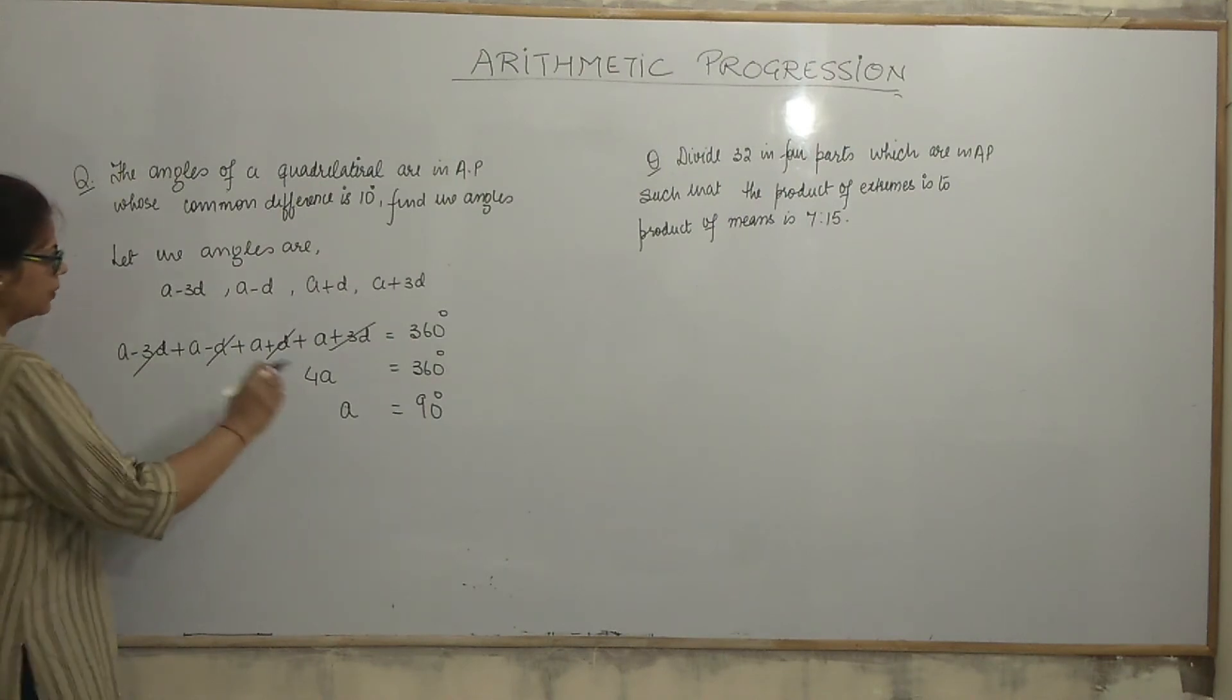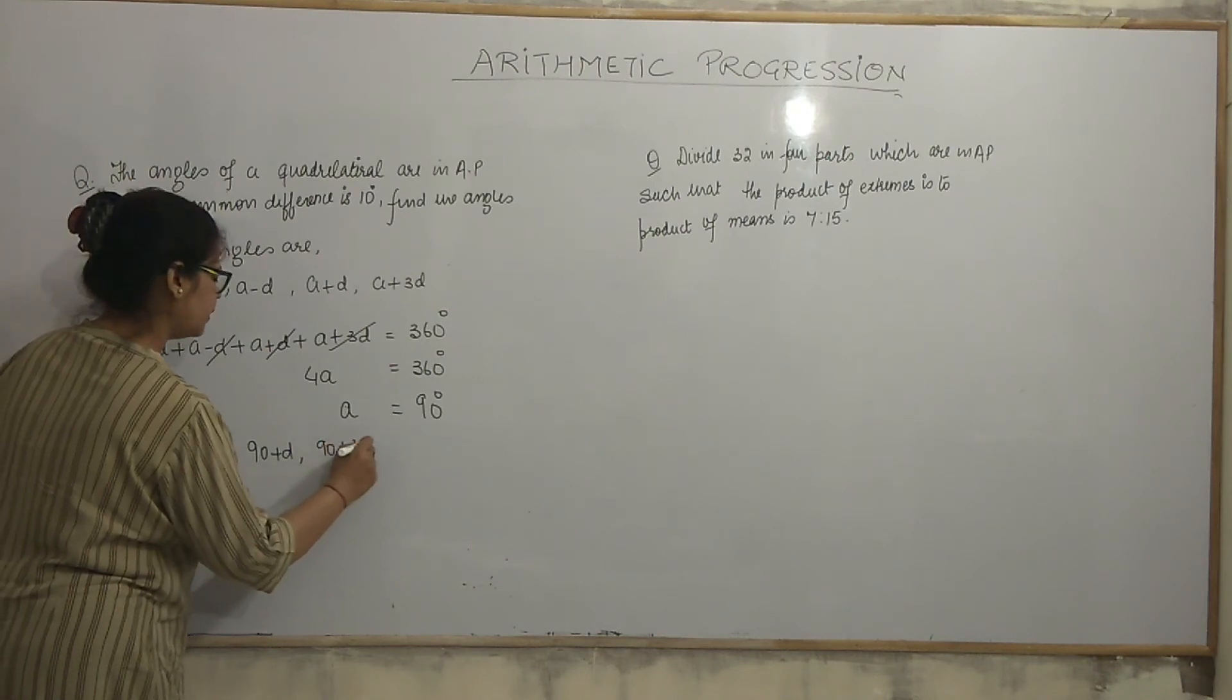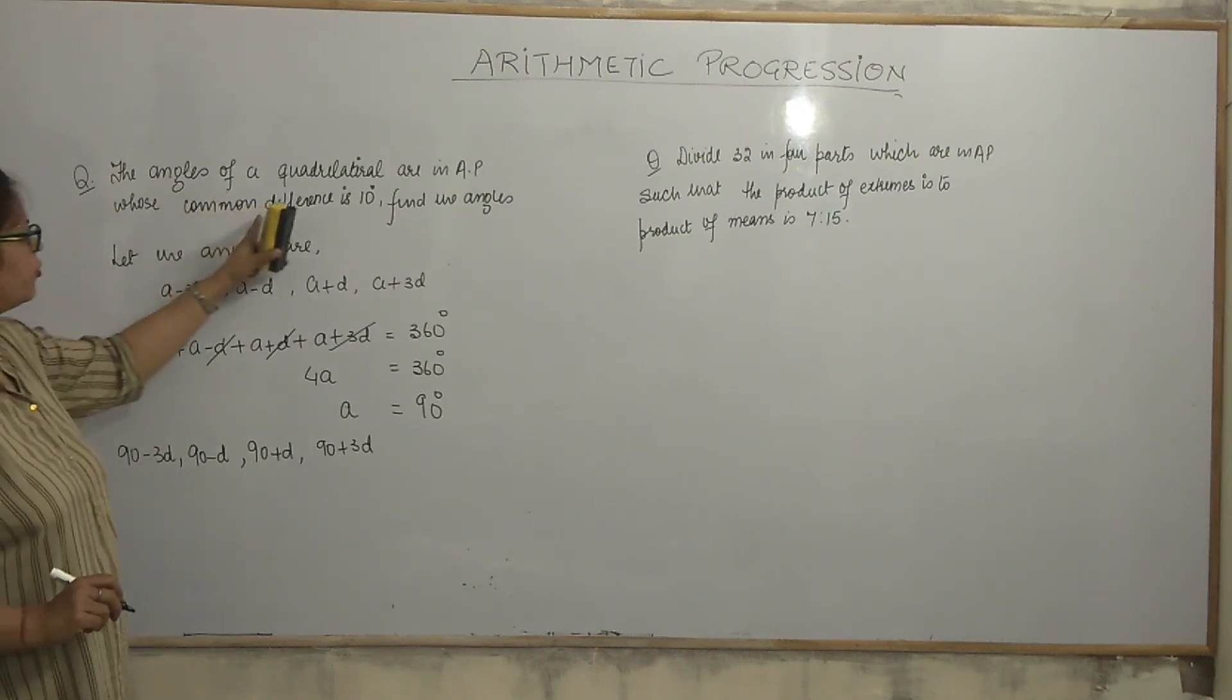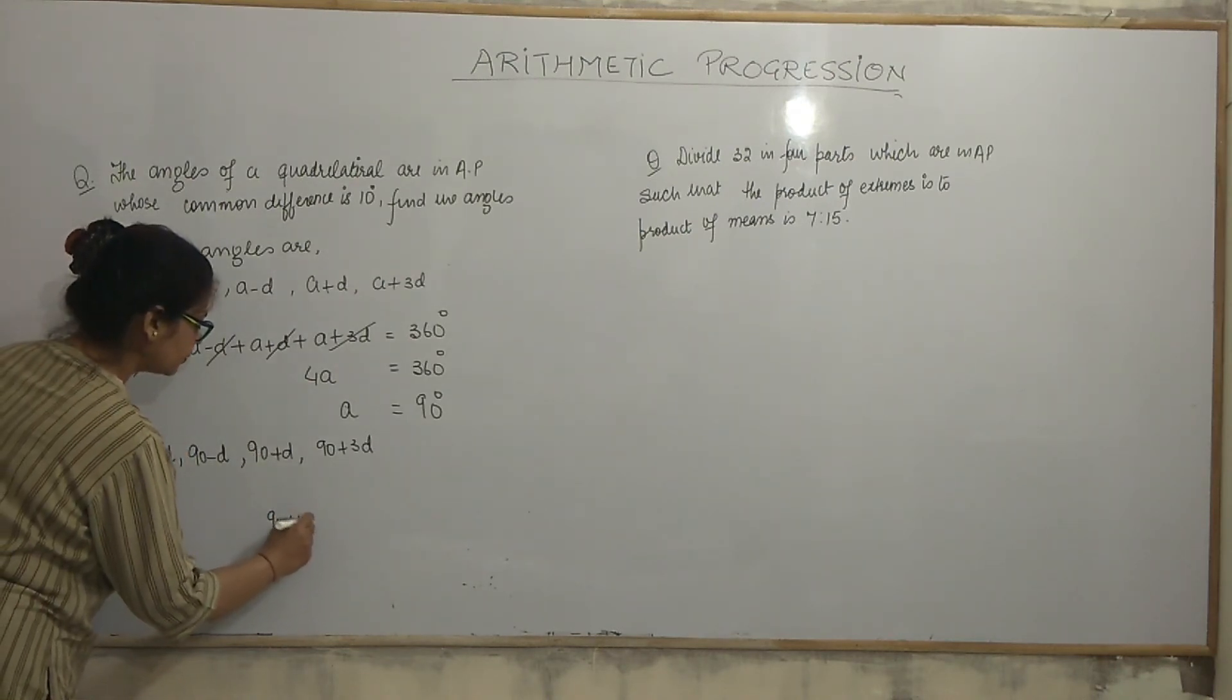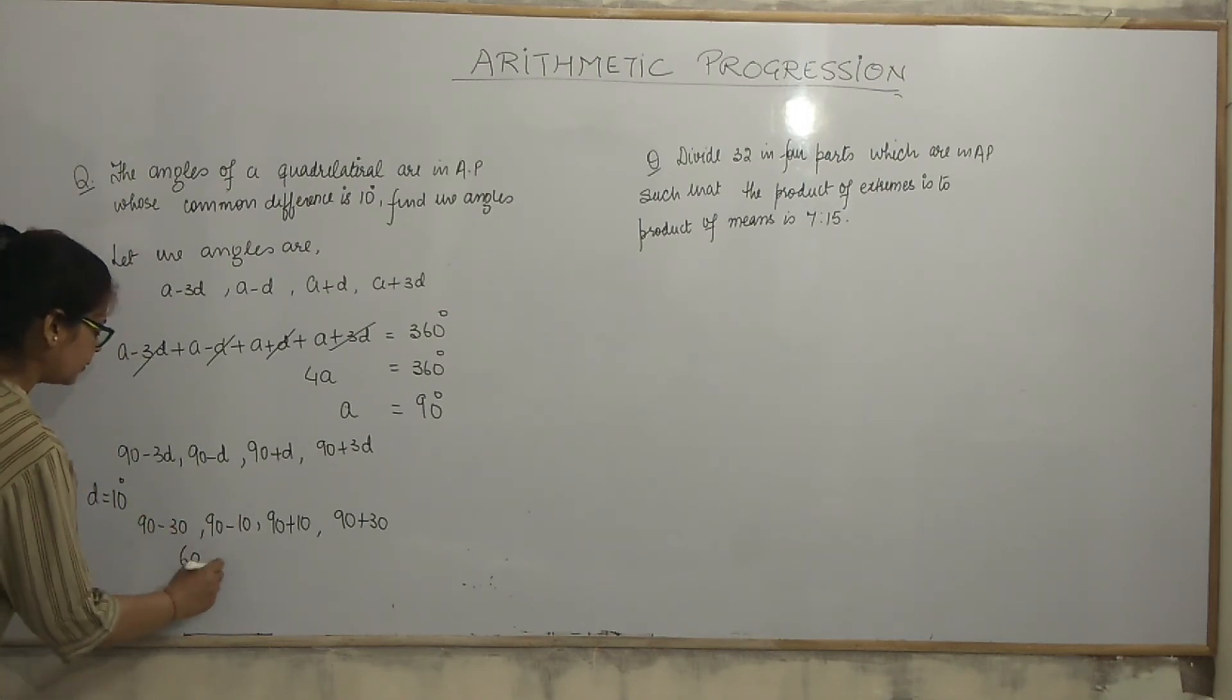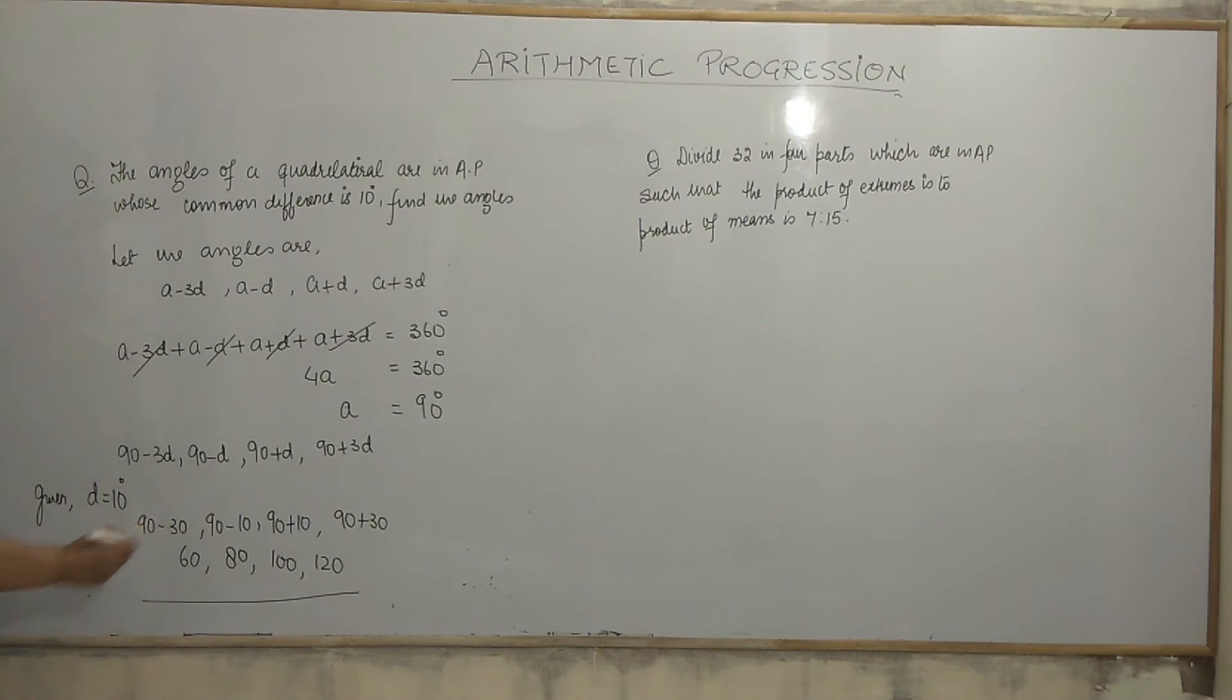So, a minus 3d plus a minus d plus a plus d plus a plus 3d is equal to 360 degree. 3d and minus 3d, minus d and plus d cancel. 4a is equal to 360 degree. So, a is equal to 90 degree. So, our angles are 90 minus 3d, 90 minus d, 90 plus d, and 90 plus 3d. Whose common difference is 10? Oh, wonderful. d is equal to 10. Angles become 90 minus 30, 90 minus 10, 90 plus 10, 90 plus 30. 60, 80, 100 and 120. That's all.